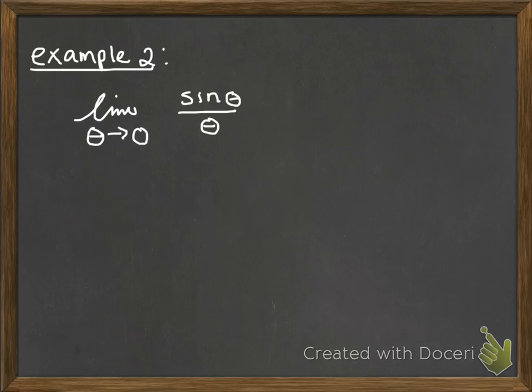OK. Here's our second problem. So we're going to have the limit as theta approaches 0 of sine theta over theta. Again, the denominator is going to become 0. Again, I cannot factor, nor can I multiply by the conjugate to help.